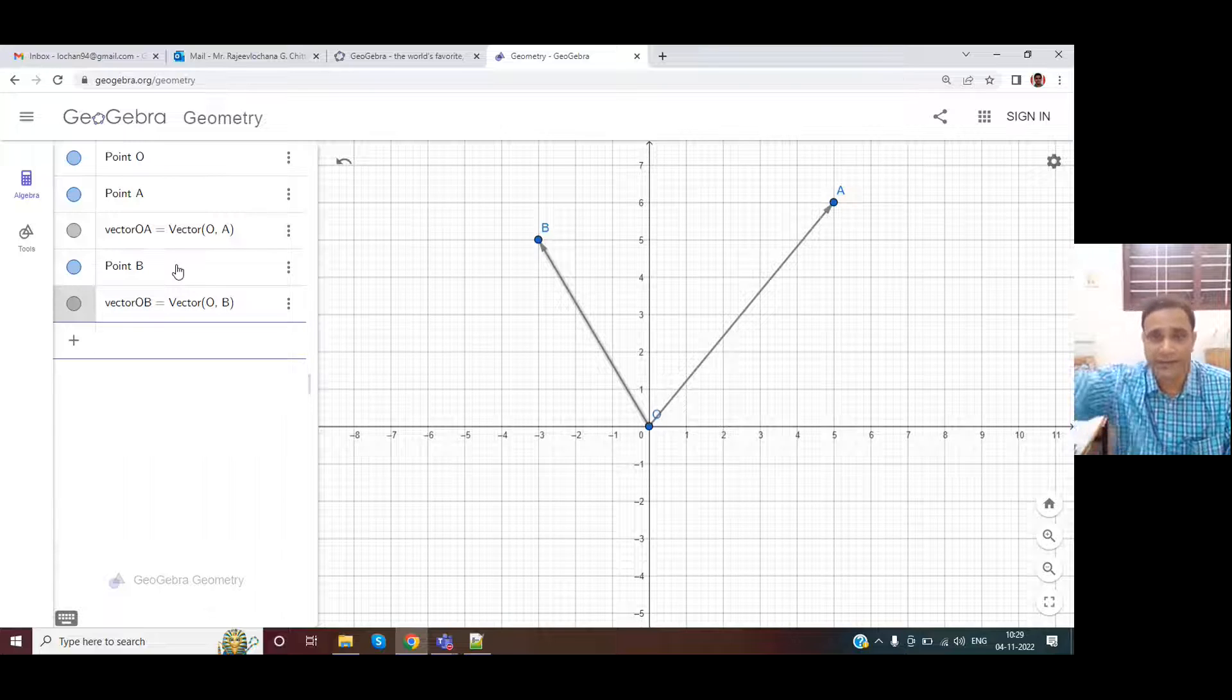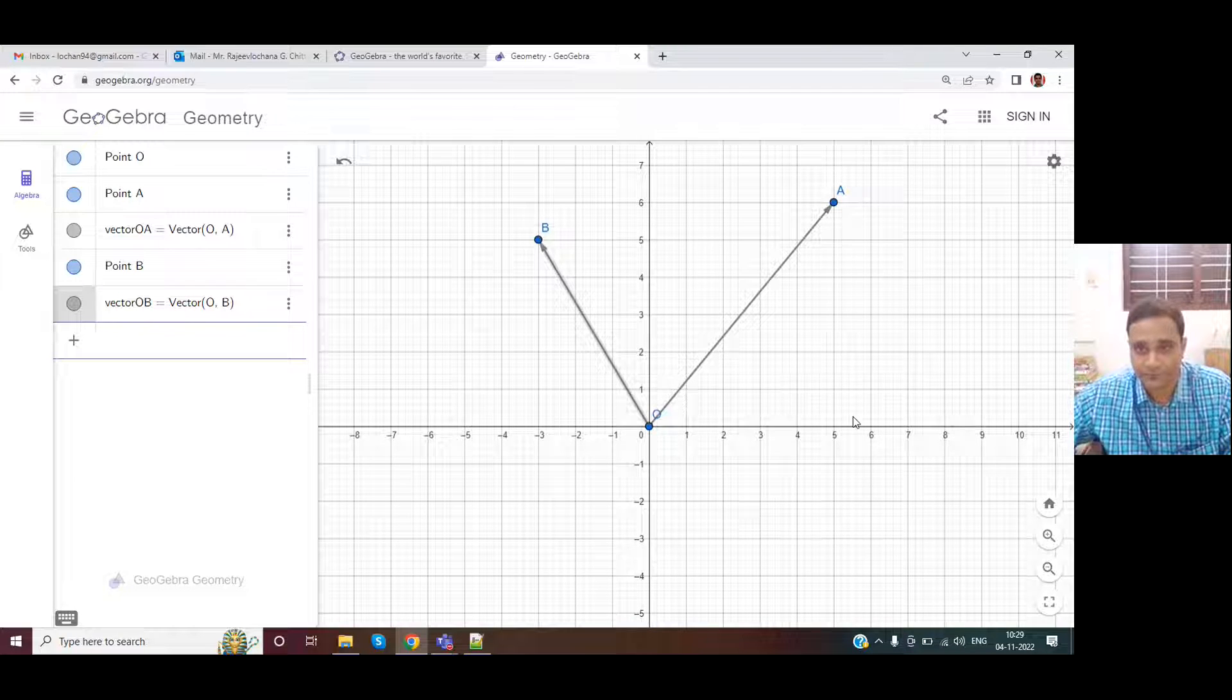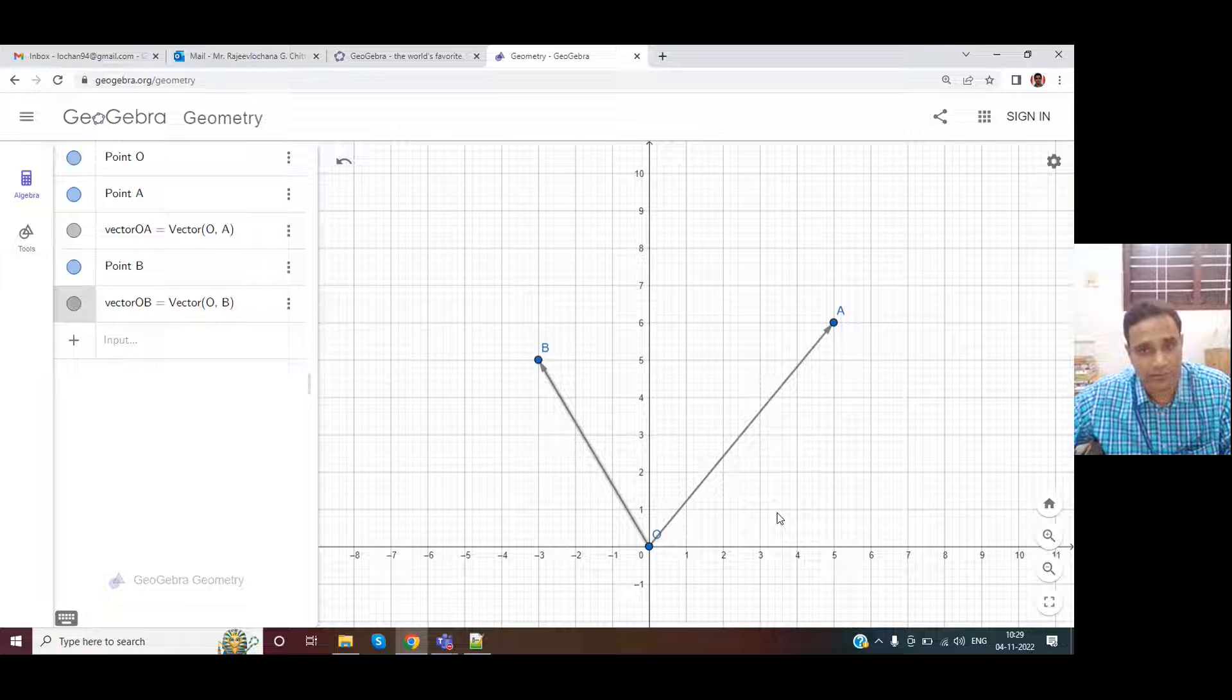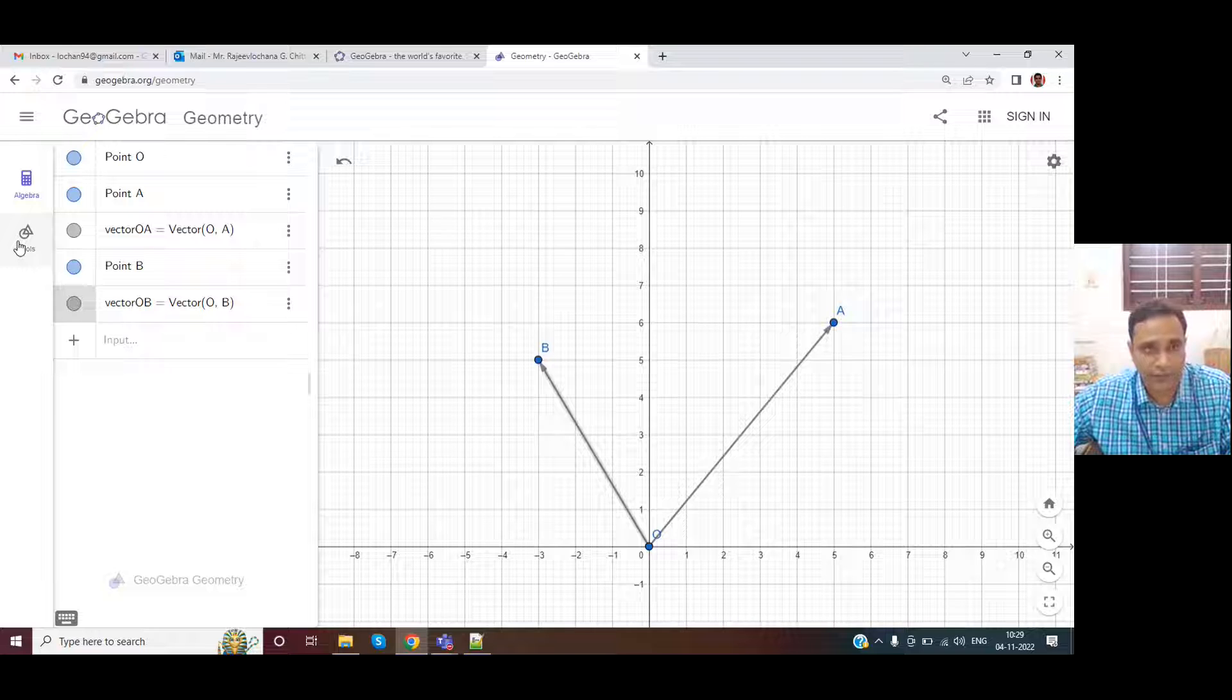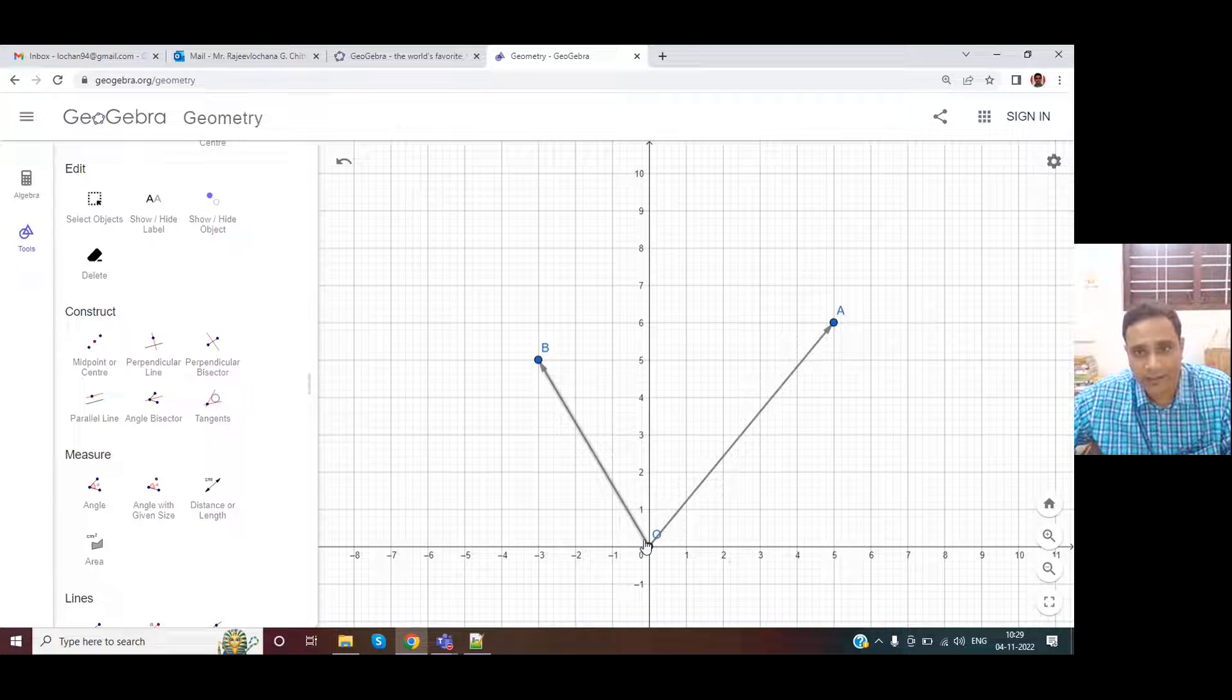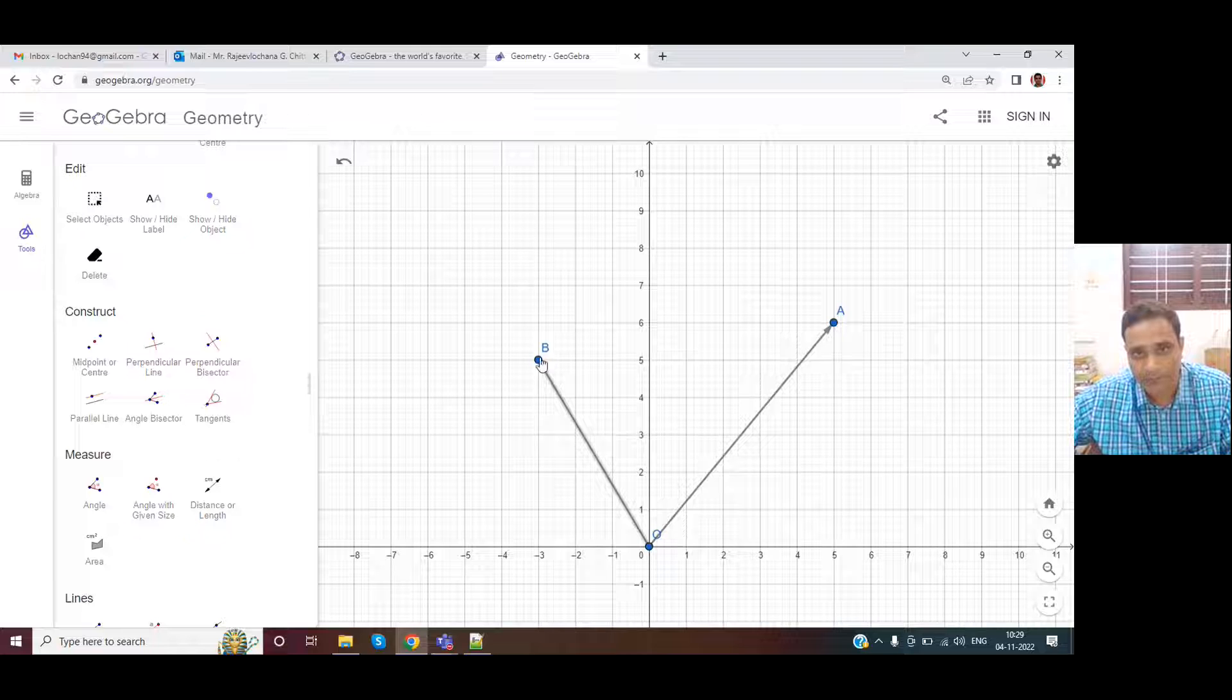Now, if the students have to add vectors, we have taught them parallelogram law. Okay, so if at all, I want to complete this parallelogram, what can I do using the user interface? So I would want a line parallel to OA passing through B. Okay, so I can use this parallel line.